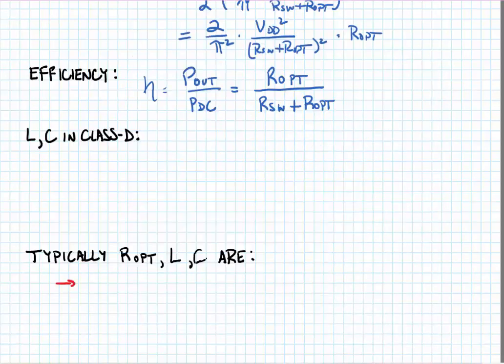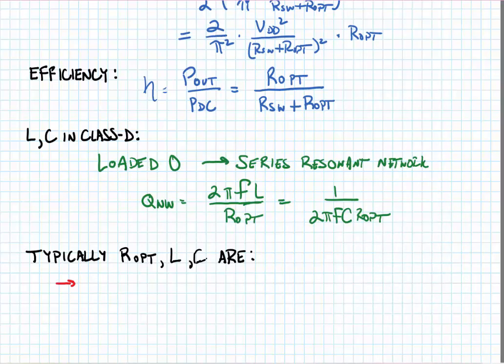Now, the LC values in the class D network are typically determined by the loaded Q of the series resonant network. These are given by our classical definition for series resonant networks of x divided by r.